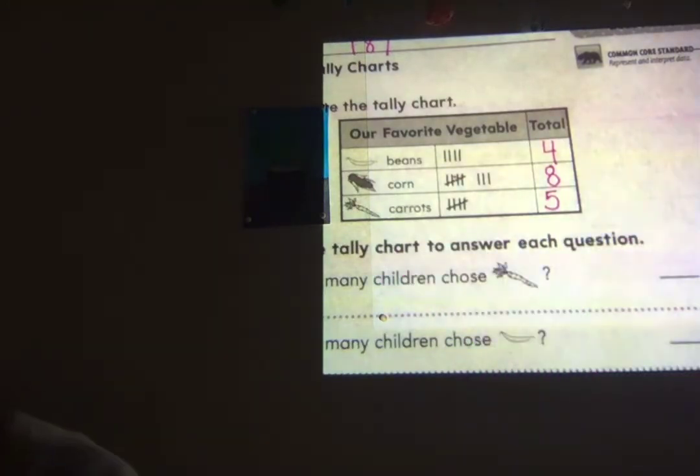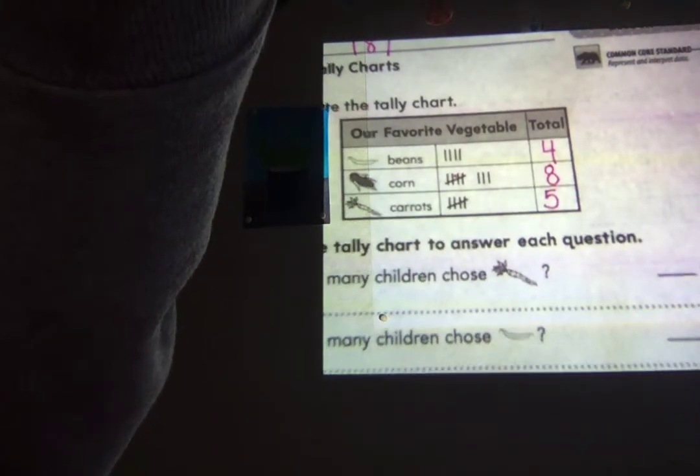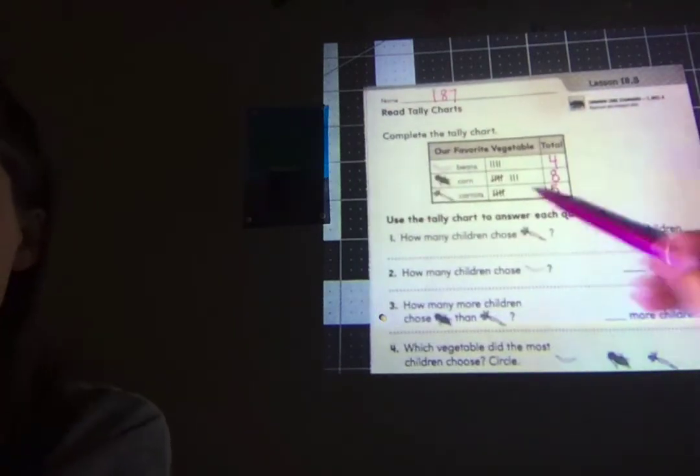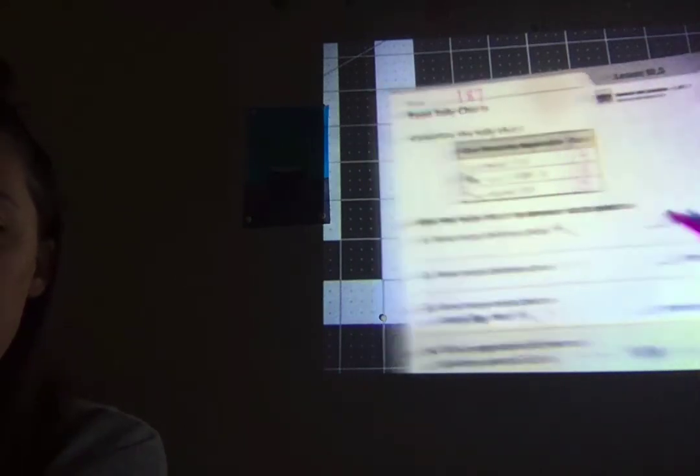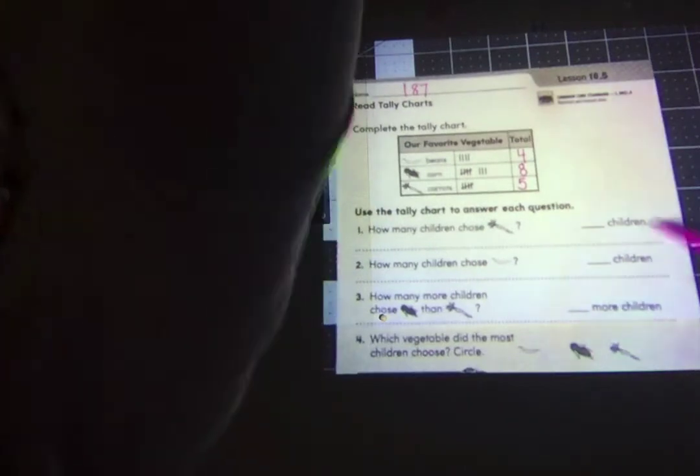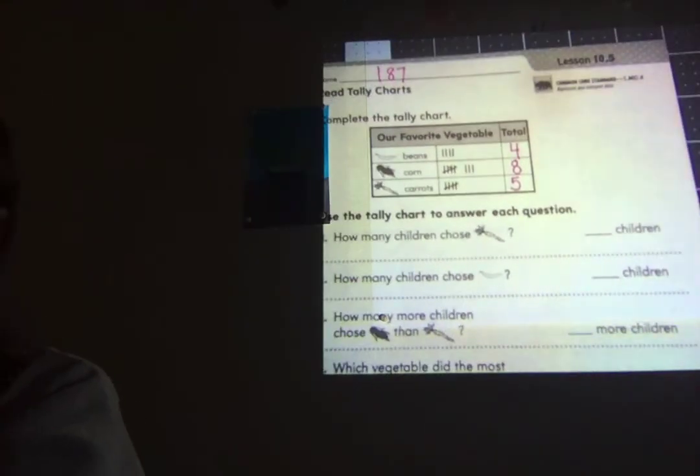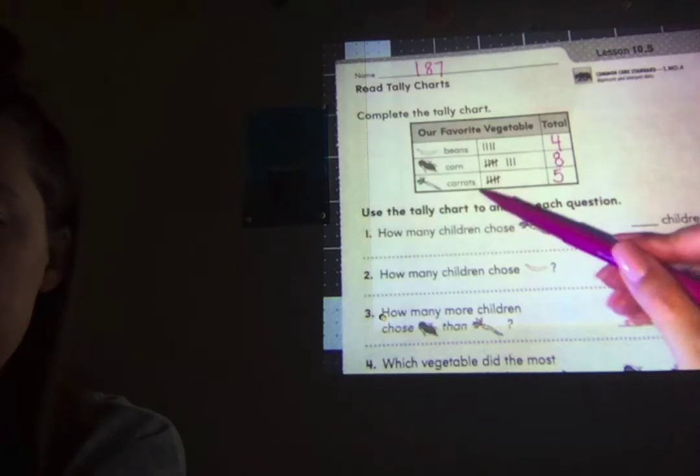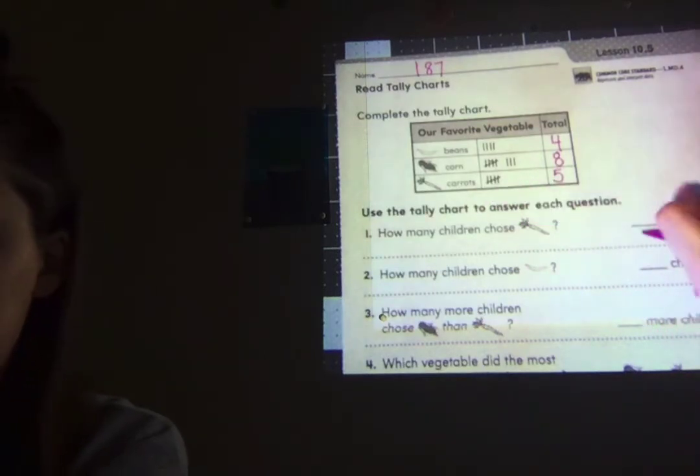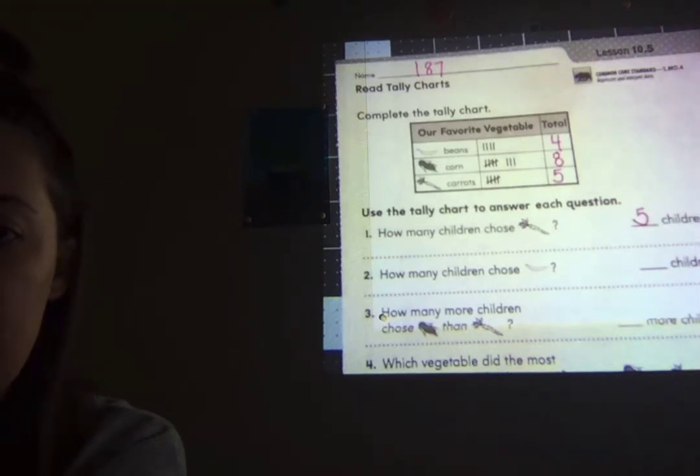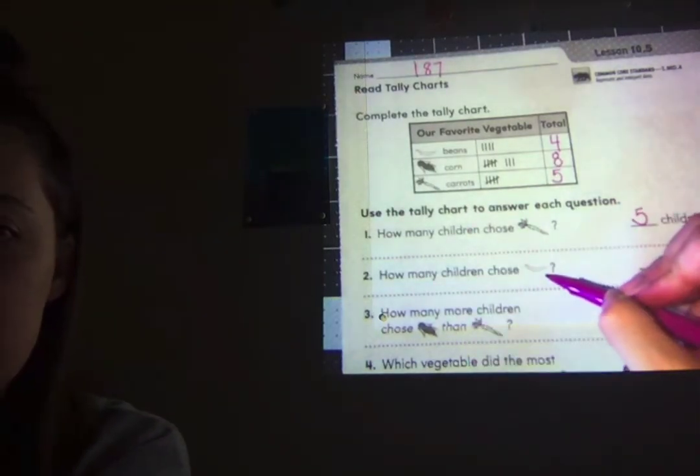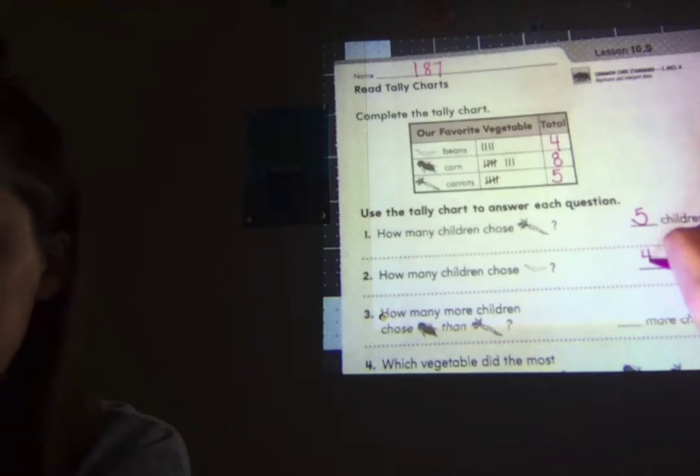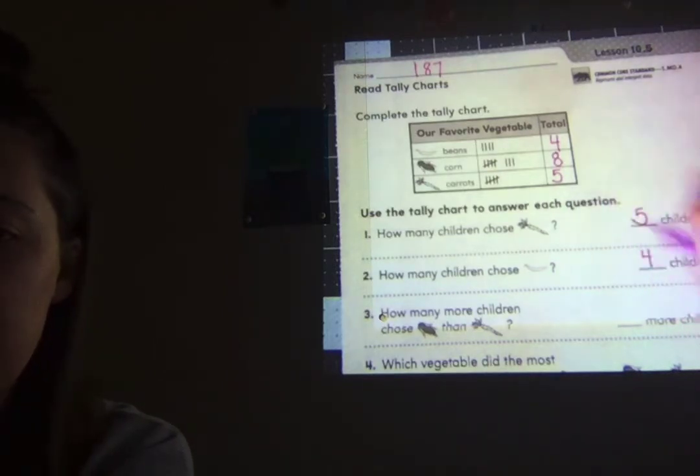So just using that tally chart, we were able to figure out how many people liked beans the best, how many people liked corn the best, and how many people liked carrots the best. Now we're going to answer some questions using the tally chart. I'm going to go ahead and zoom out a little bit. You should copy that down if you haven't already. Our instructions say to use the tally chart to answer each question. So number one. How many children chose carrots? Well, that's easy, right? How many children chose carrots? Five. How many children chose beans? Well, that's easy, right? Beans? Four. Four kids like beans.